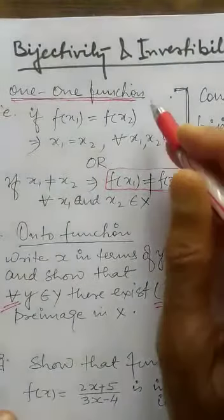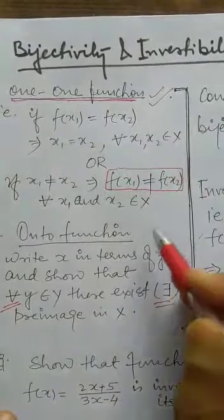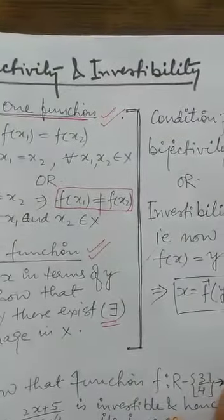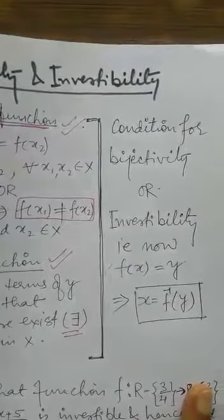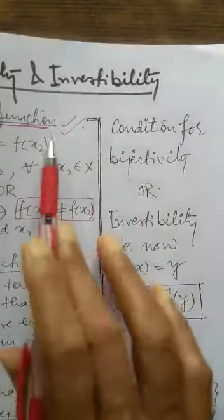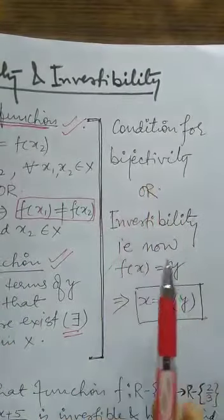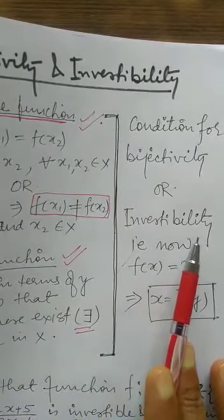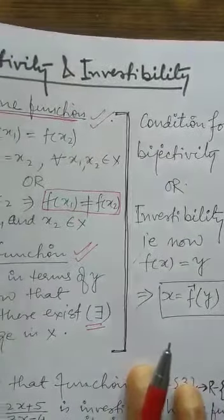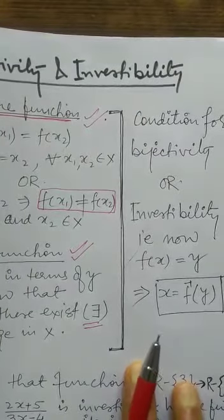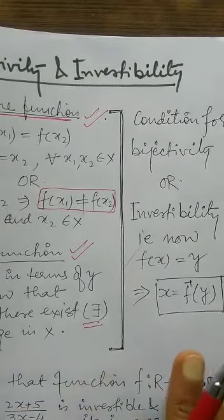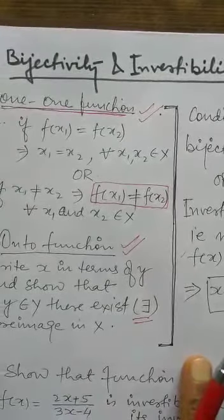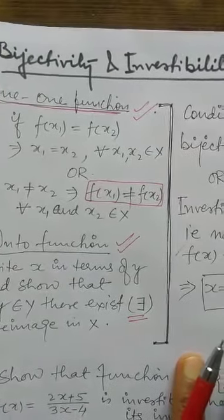If a function is both one-one and onto, then collectively we can say the function is bijective. These are the two conditions required for a function to be bijective: one-one and onto. All bijective functions are invertible, as discussed in the previous video. So if the function is proved one-one and onto, it will also be invertible.